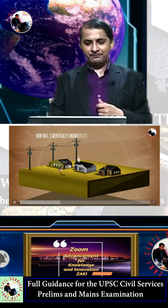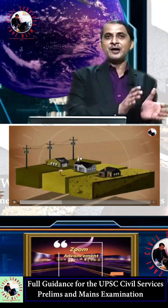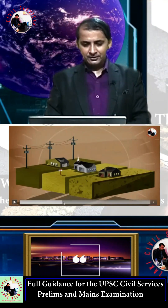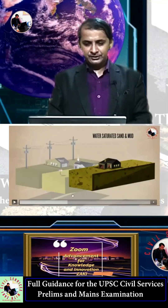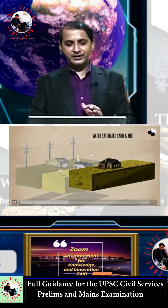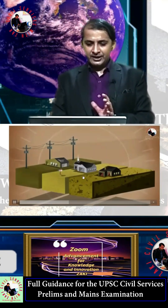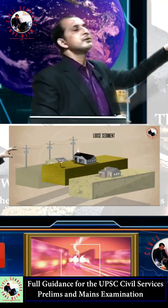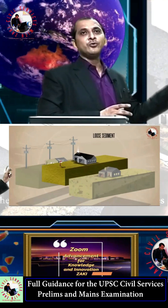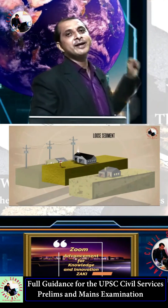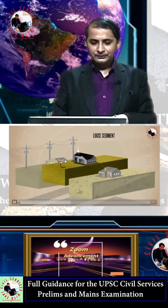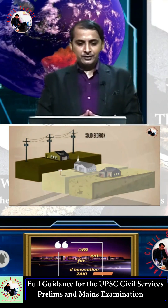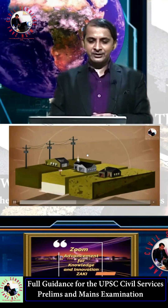Here is a structure showing buildings built on three different types of ground. The first is water-saturated mud and sand, the second is loose sediment, and the third is solid bedrock. These three ground conditions significantly affect how buildings respond to seismic waves.